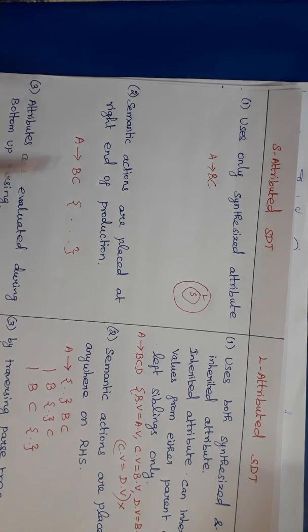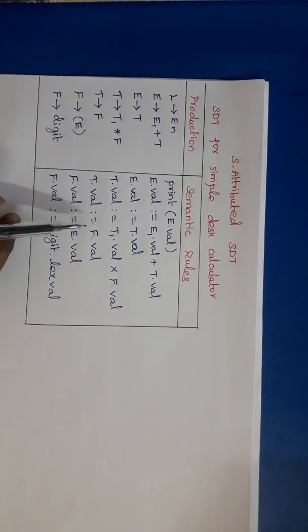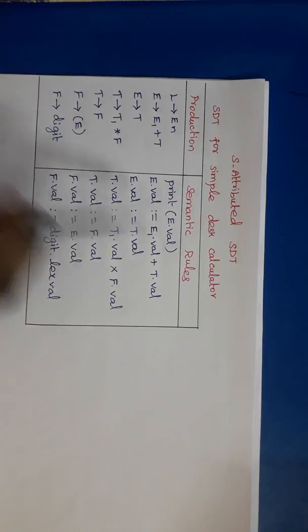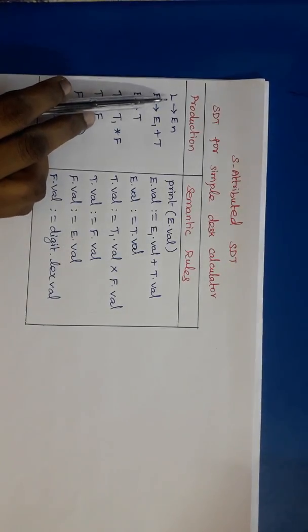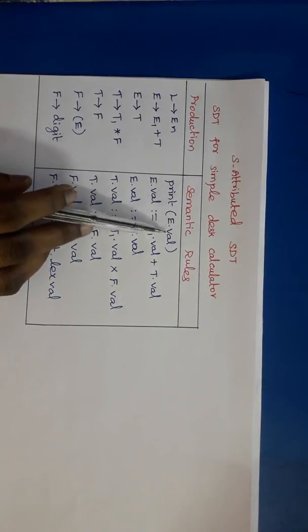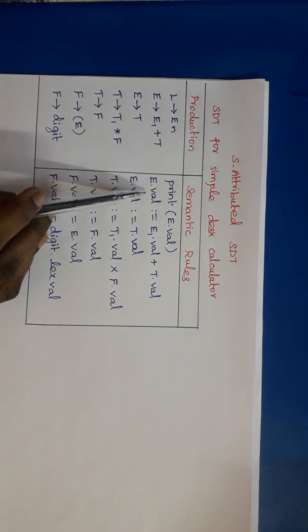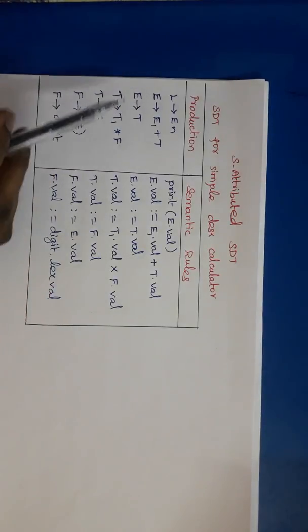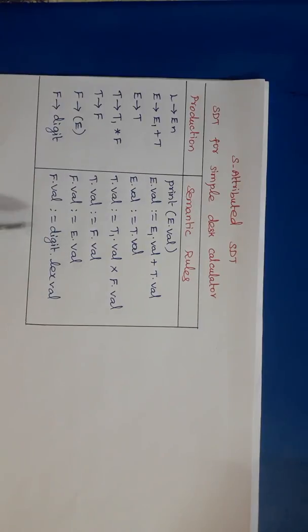Now we will see one example for S-attributed SDT and L-attributed SDT. This is an example for S-attributed syntax directed translation — a simple desk calculator. These are the set of productions and semantic rules. The first production is L tends to E N, and the semantic action associated with this production is print E.val. For each non-terminal symbol, the synthesized attribute val is associated.